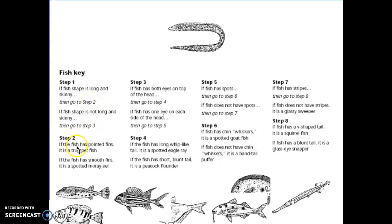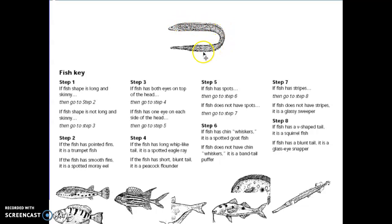Here's step two, and here are my two statements. Does it have pointy fins — making it a trumpet fish — or does it have smooth fins, making it a moray eel? Its fins are really hard to see, but if you look along the whole back of its body, those are smooth. So this guy would be a moray eel.